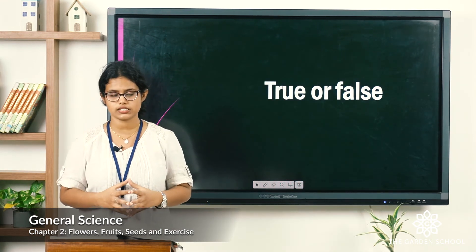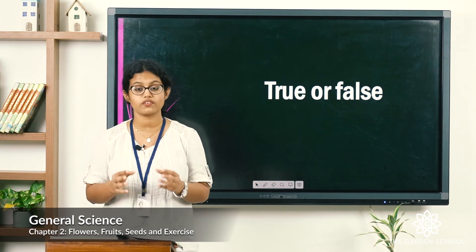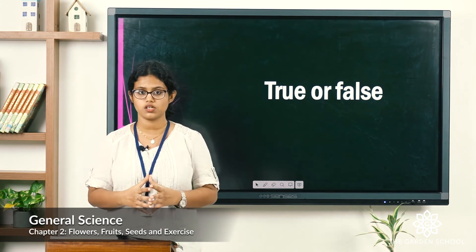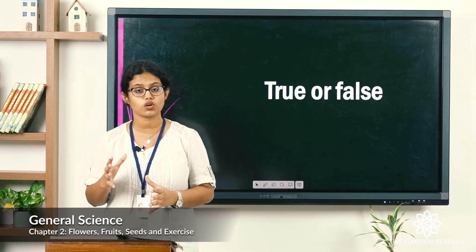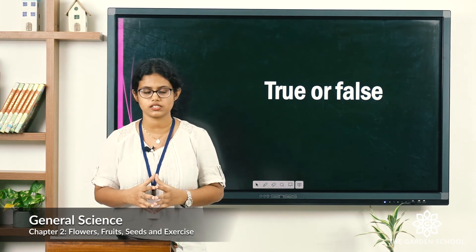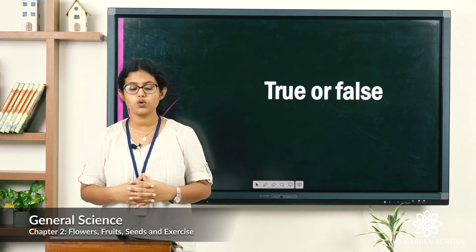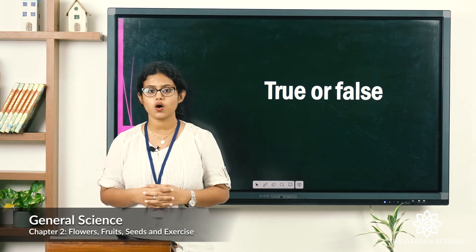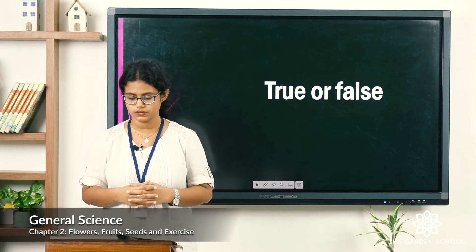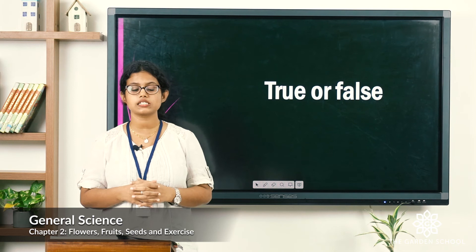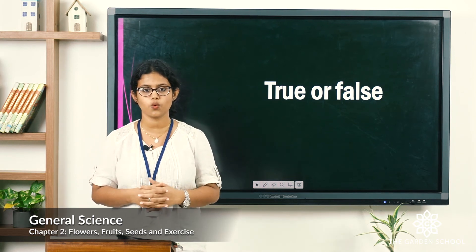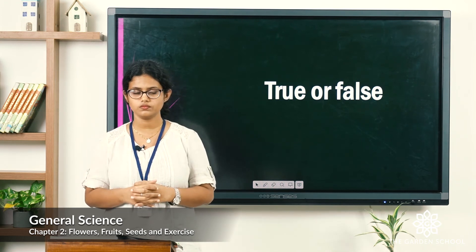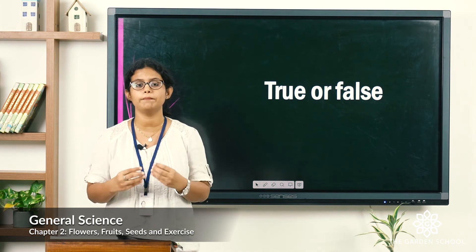Moving on to the second exercise — true or false. There are five questions. Tick for true statements and cross for false statements. First: all mango trees have the same type of leaves. Second: leaf veins are found only on large leaves. Third: all plants have the same kind of roots. Fourth: air enters a plant through its stomata. Fifth: a seed has a baby plant in it.